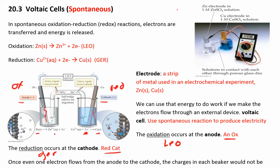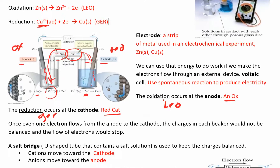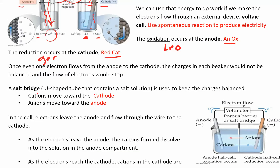The salt bridge is there to keep the charge balanced; otherwise electrons won't flow. You start building up zinc 2+ ions, so anions from the salt bridge flow into the anode side to neutralize them. Salt is just an ionic compound with cations and anions. The anions flow to the anode and the cations flow to the cathode, because at the cathode, reduction consumes positive ions from solution and they need to be replaced.